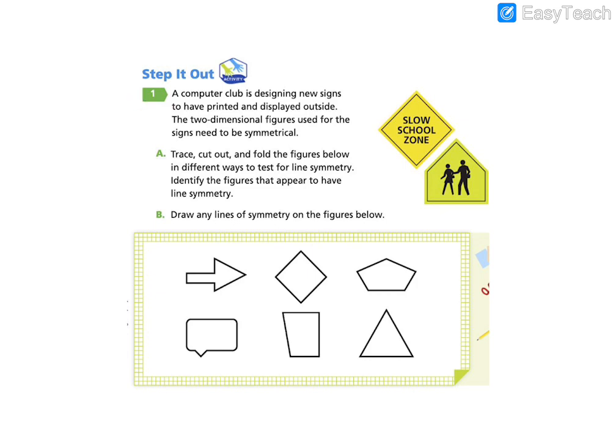Let's take a look at our first question. A computer club is designing new signs to have printed and displayed outside. The two-dimensional figures used for the signs need to be symmetrical. Trace, cut out, and fold the figures below in different ways to test for lines of symmetry. Identify the figures that appear to have line symmetry. Draw any lines of symmetry on the figures below.